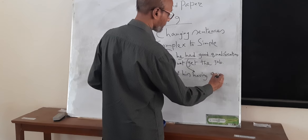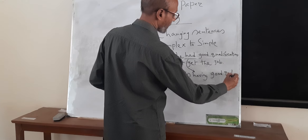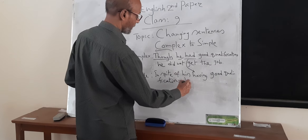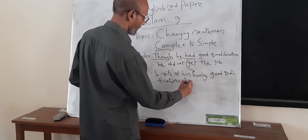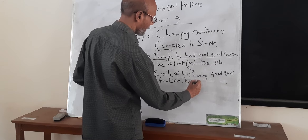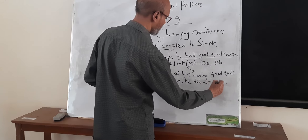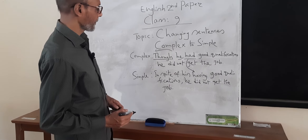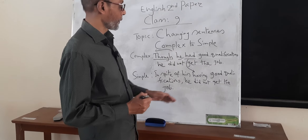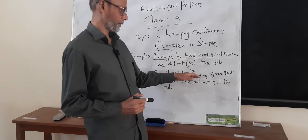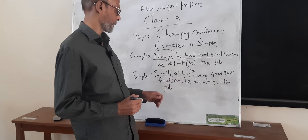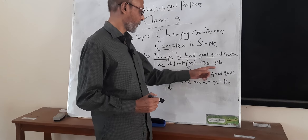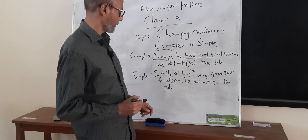So we write: 'in spite of his having good qualifications' — and this is the principal clause — 'he did not get the job.' You can also remove 'having' and write: 'in spite of his good qualifications, he did not get the job.'